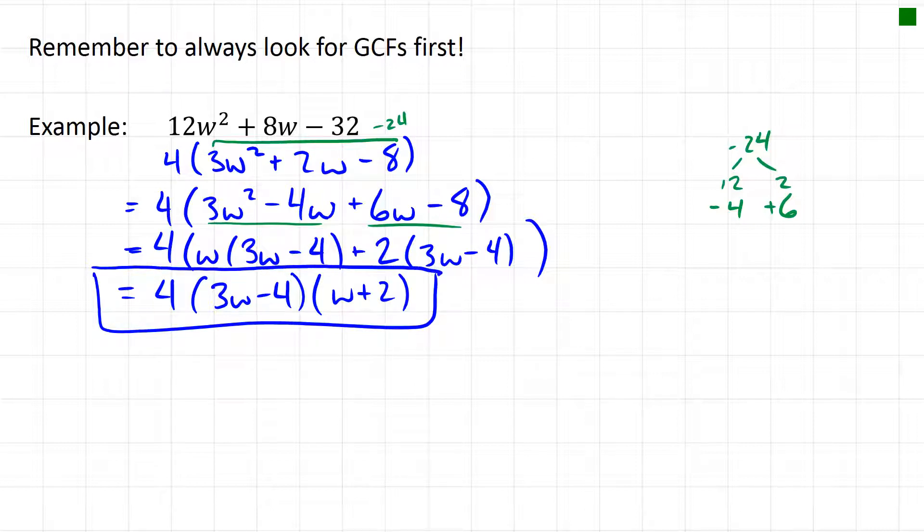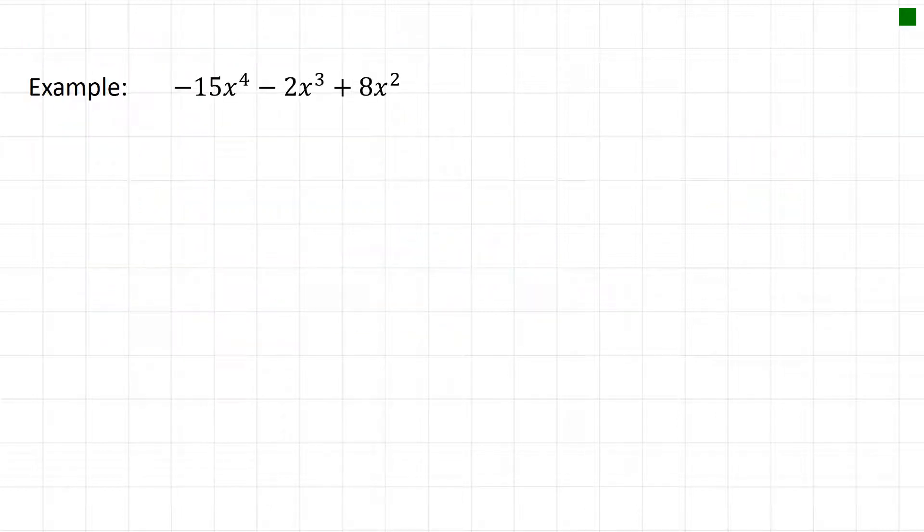Same thing here, what do we have for greatest common factor? Well it looks like we have x², but I'm also going to pull out a negative because I don't want my leading term here to be negative because it just sort of messes with the factoring process a little bit. So what if we pull out a negative x²? What are we left with? Well we have 15x² now plus 2x and then minus 8.